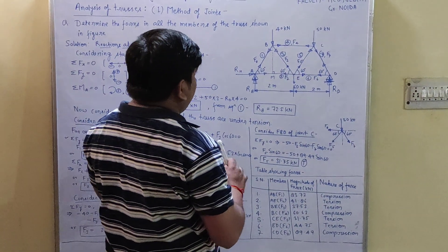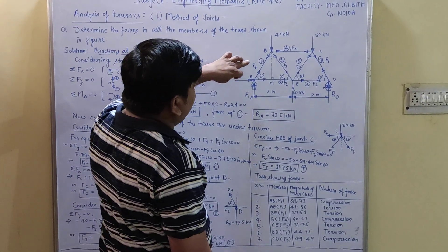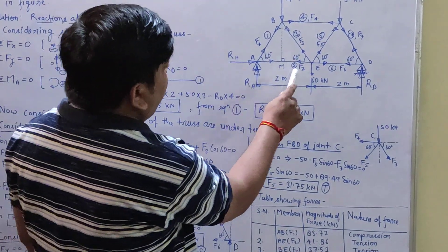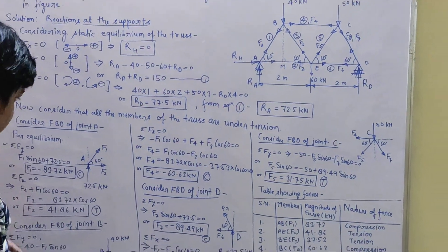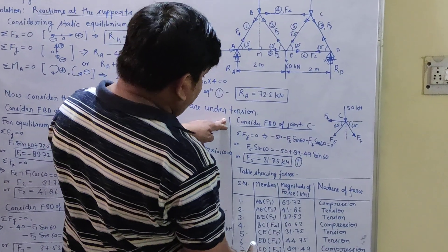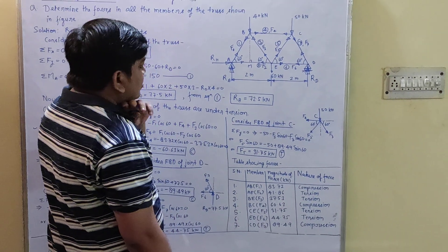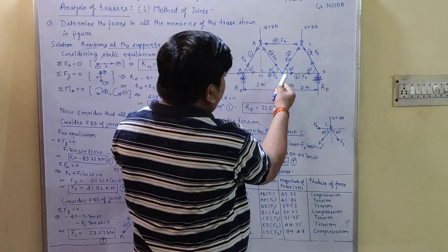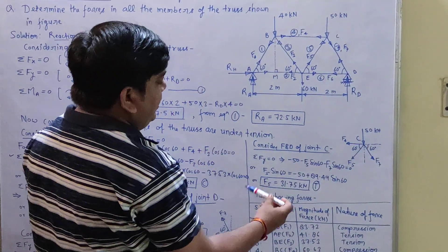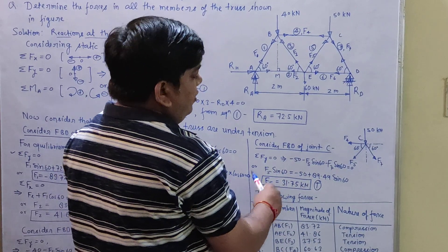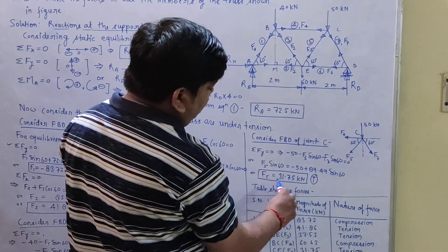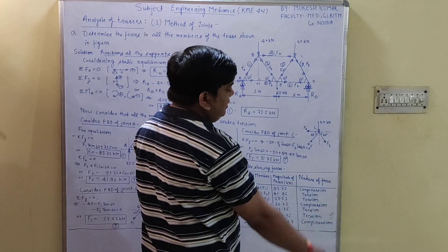At this point we now have the values of F1, F2, F3, F4, F6, and F7. The only remaining unknown force is F5. We can now consider the free body diagram of joint C, or alternatively joint E. Drawing the free body diagram of joint C and balancing forces in the horizontal or vertical direction, from these equations we find F5 = 31.75 kN, which is tensile.